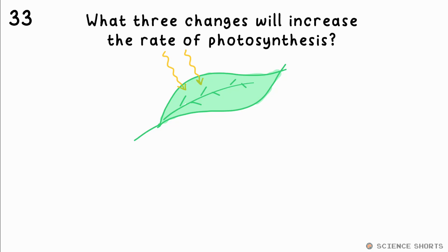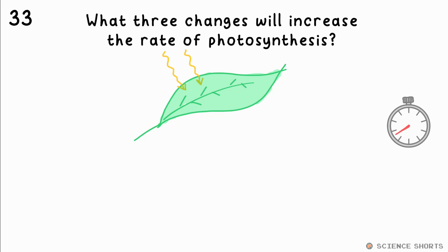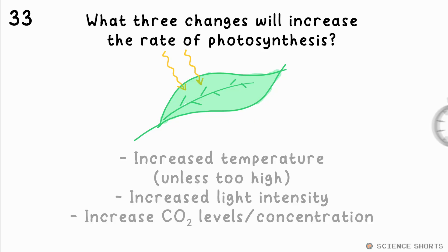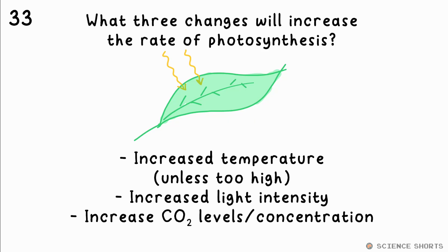Question 33. What three factors increase the rate of photosynthesis? Increased temperature, increased light intensity, and increased carbon dioxide concentration.